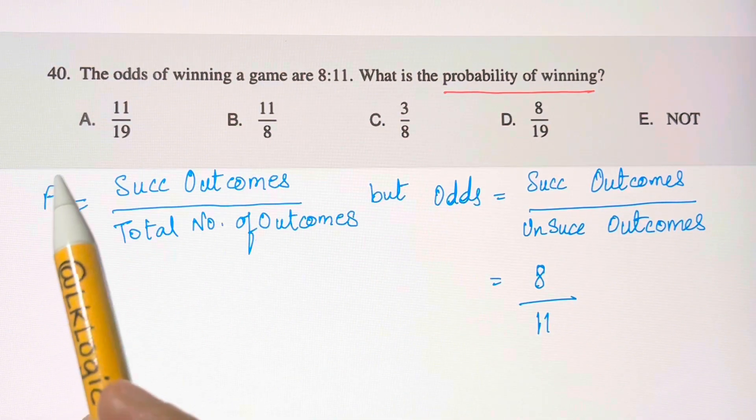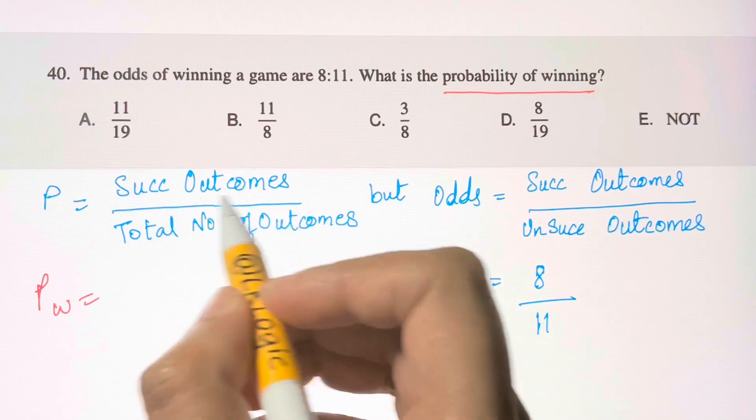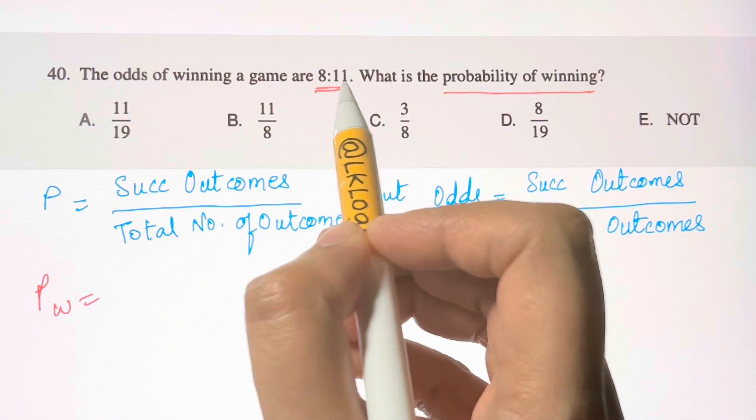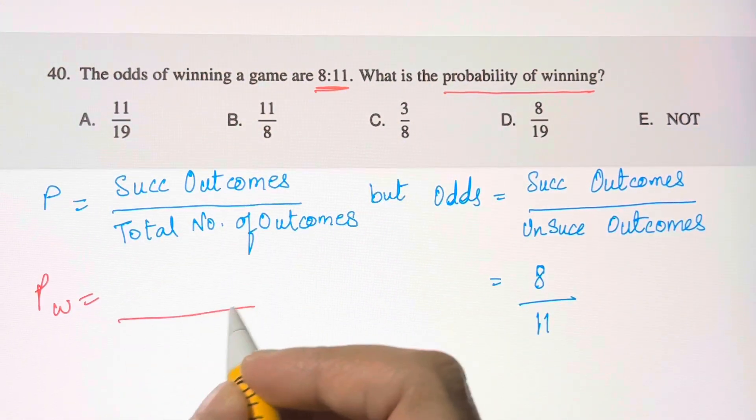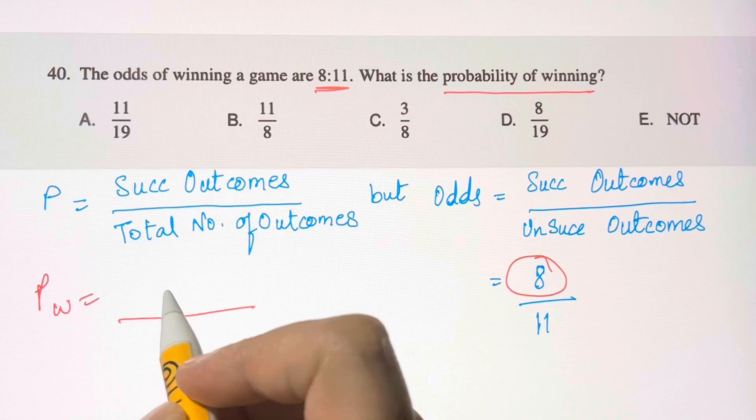So for probability of winning, you will find successful outcomes divided by total number of outcomes. Here, total number of outcomes is 8 plus 11, that's 19, and successful outcomes is 8. So 8 over 19 is your answer.